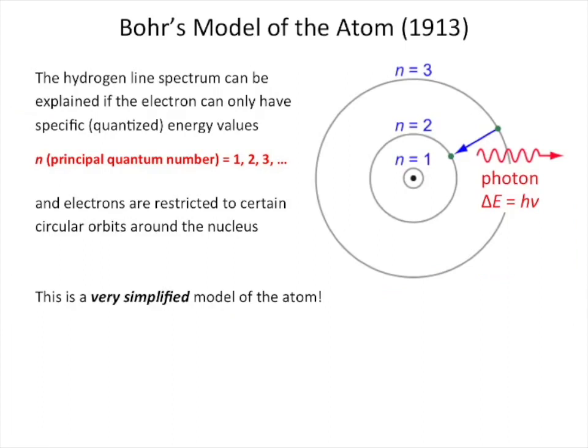So this is Bohr's model of the atom, early 1900s, and the idea here is that you have a nucleus here and then you have certain orbits around the nucleus, so this one here is n equals 1, this one here is n equals 2, the one out here is n equals 3, so on and so forth. We give these energy levels principal quantum numbers, n equals 1, n equals 2, n equals 3, and that defines the level.